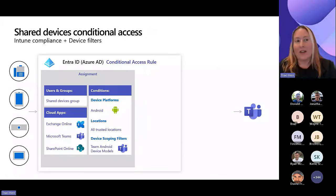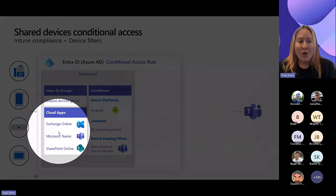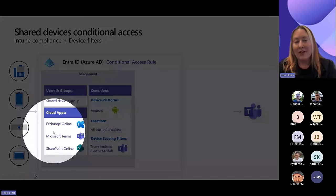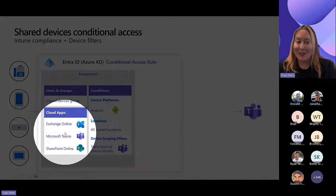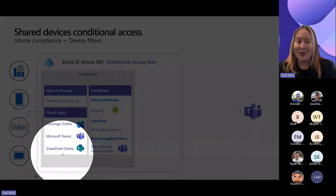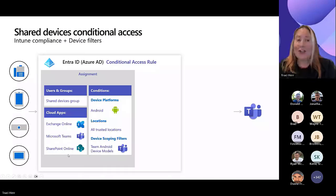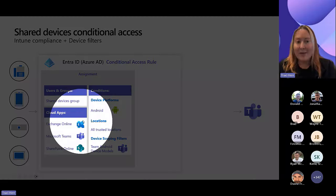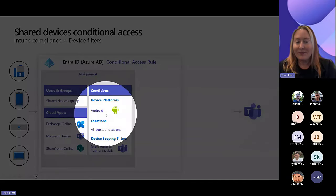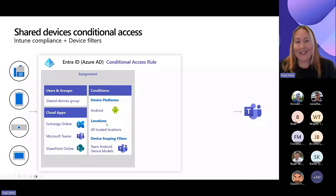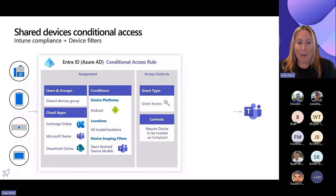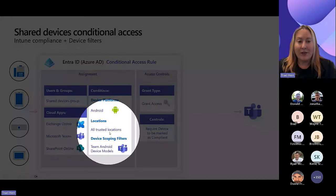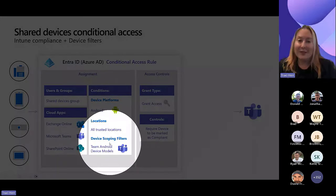When going through that process and getting through conditional access, we're checking for cloud apps. Our Teams devices use Exchange, Teams, and SharePoint Online. So if you have conditional access policies that target those cloud apps and also target the Android platform, those existing policies will affect our Teams devices. We need to do something special, like use a scoping filter to exclude or include our Teams devices.